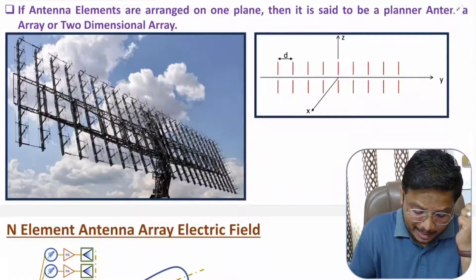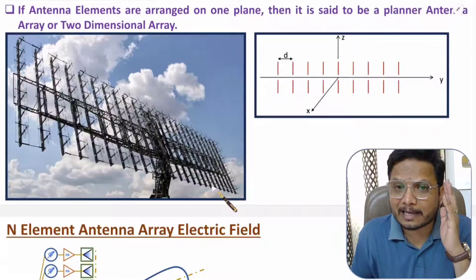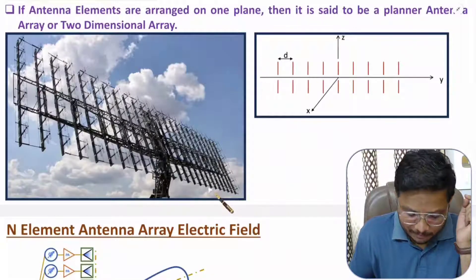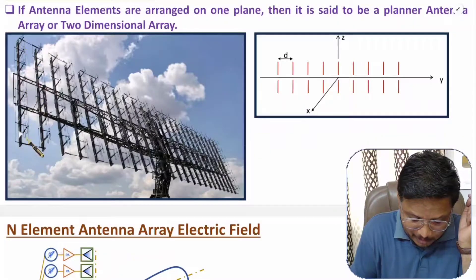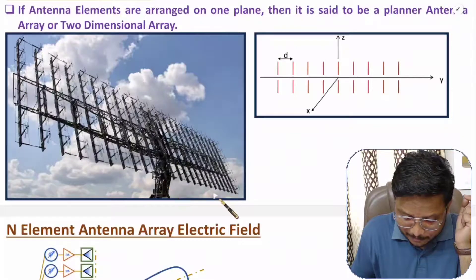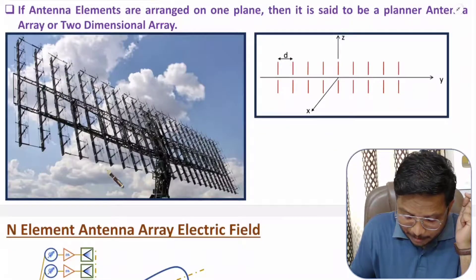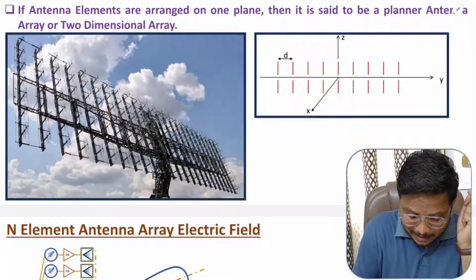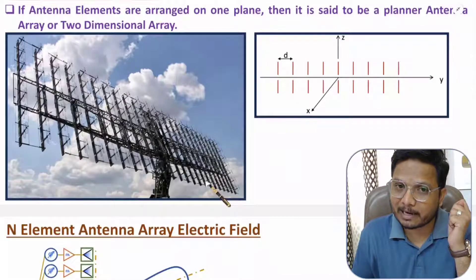In the second diagram, we have a planar antenna array. Planar antenna array means antennas are arranged in a single plane. If you consider the vertical axis as the y-axis and the horizontal axis as the x-axis, then you can observe that folded dipoles are placed in a plane. So, this is an example of a two-dimensional array, or you can say a planar array.